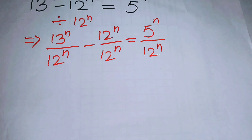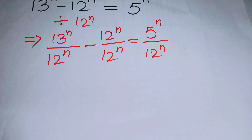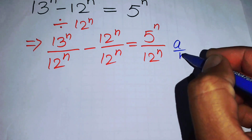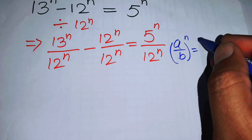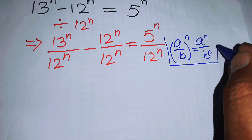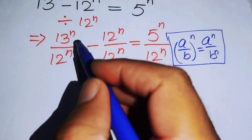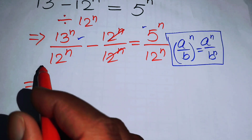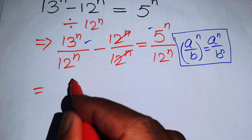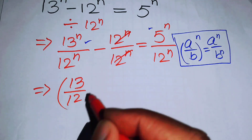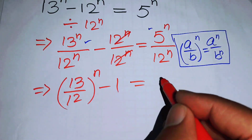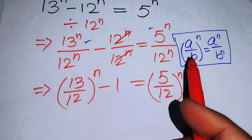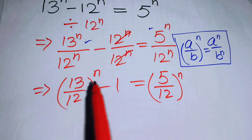In the next step we simplify the terms by applying the exponential law: if we have (a/b) to the power of n, it equals a to the power of n over b to the power of n. Applying this law, the middle terms cancel, and we get (13/12) to the power of n minus 1 equals (5/12) to the power of n.